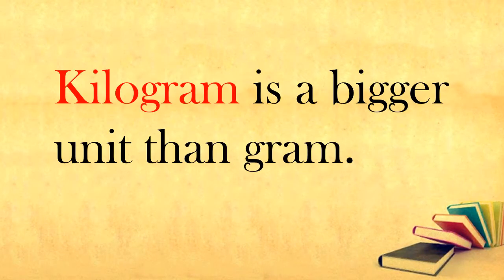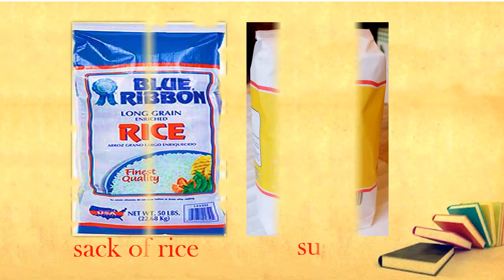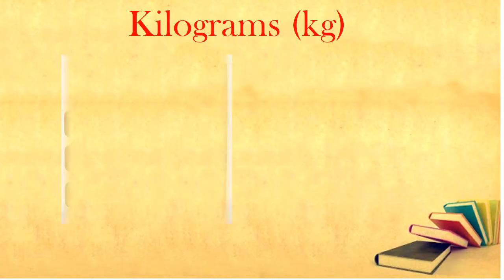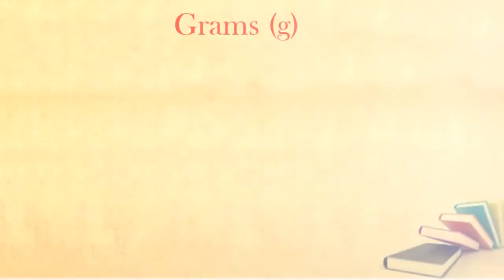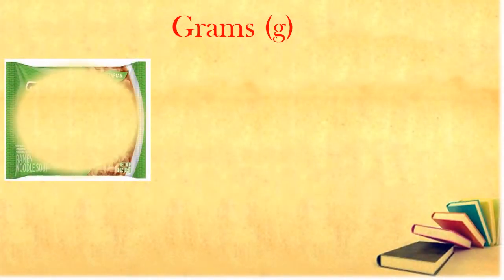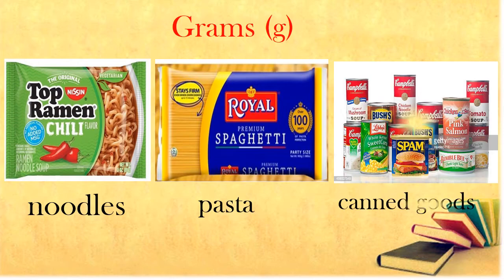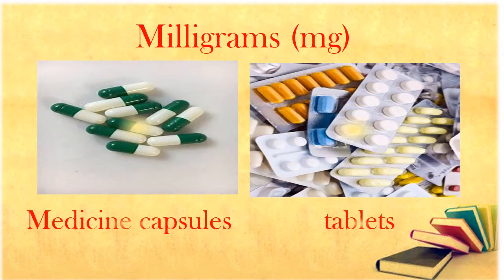A gram is a bigger unit than a milligram. The mass of heavy objects like a sack of rice or sugar is expressed in kilograms. The mass of medicine capsules or tablets is given in milligrams.